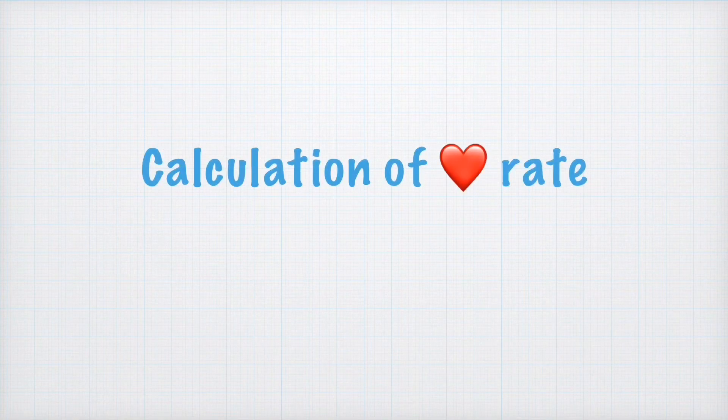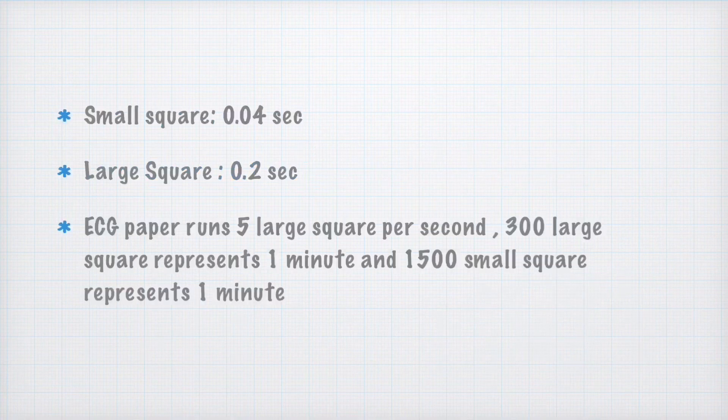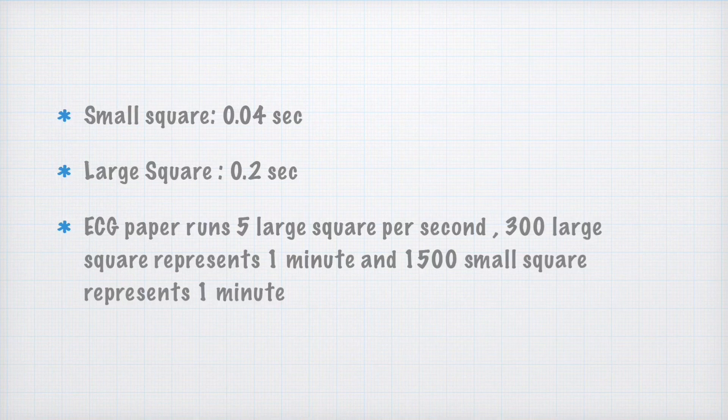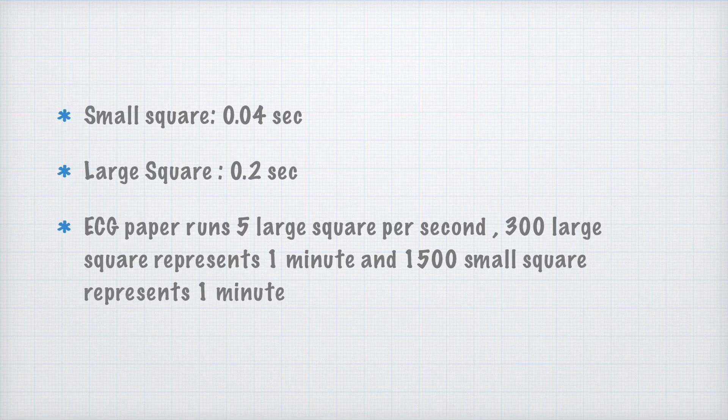Moving further, calculation of heart rate. Standard ECG paper runs at the speed of 25 mm per second. So each small square represents 0.04 second and each large square represents 0.2 second. As ECG paper runs 5 large squares per second, 300 large squares represents 1 minute and 1500 small squares represent 1 minute.